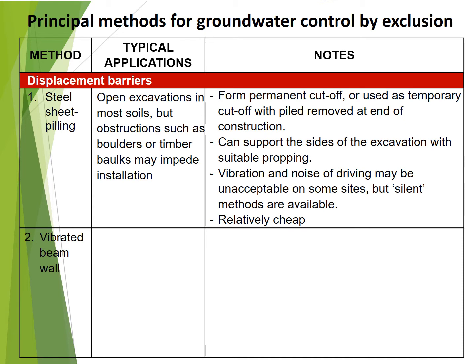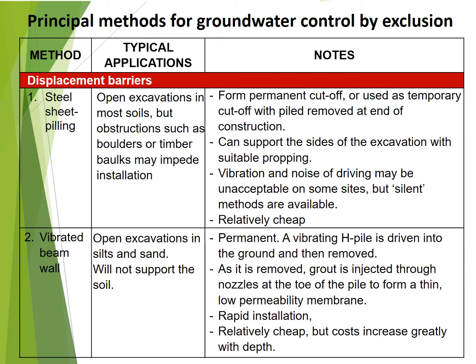2. Vibrated beam wall: used for open excavations in silts and sand. Will not support the soil. Permanent. A vibrating H pile is driven into the ground and then removed; as it is removed, grout is injected through nozzles at the toe of the pile to form a thin, low permeability membrane. Rapid installation. Relatively cheap, but costs increase greatly with depth.